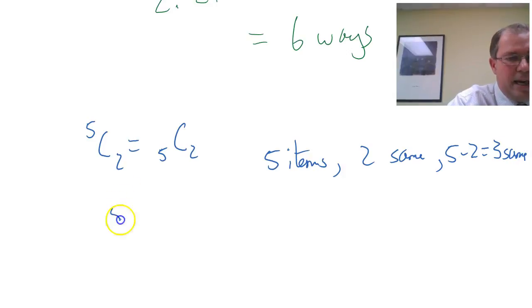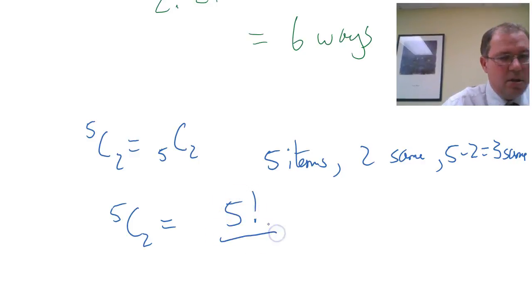So we can get the answer for 5 choose 2 really nice and easily. 5, imagine they're all different, which they're not, but let's imagine they're all different. So 5 factorial, because we only have a's and b's. And 2 of them have to be the same, 5 choose 2, so 2 of them are the same.